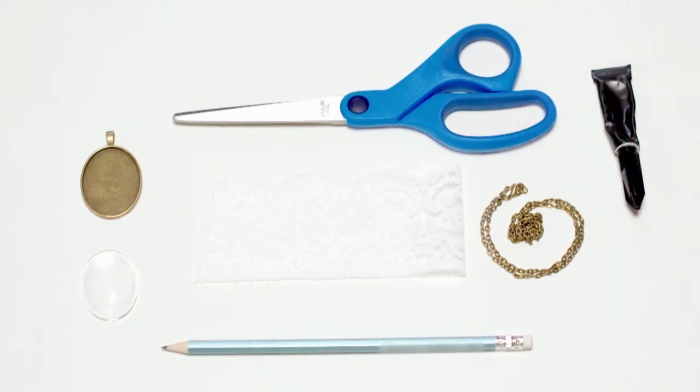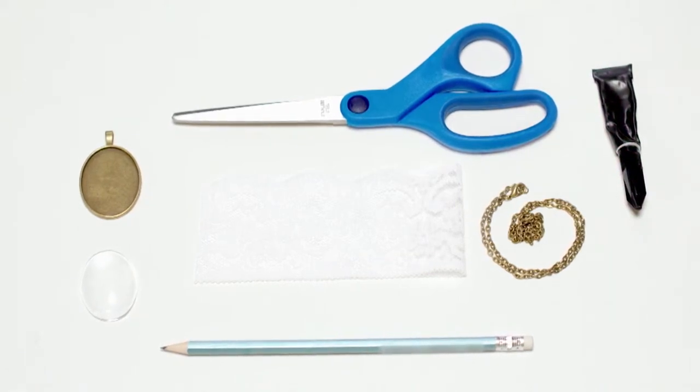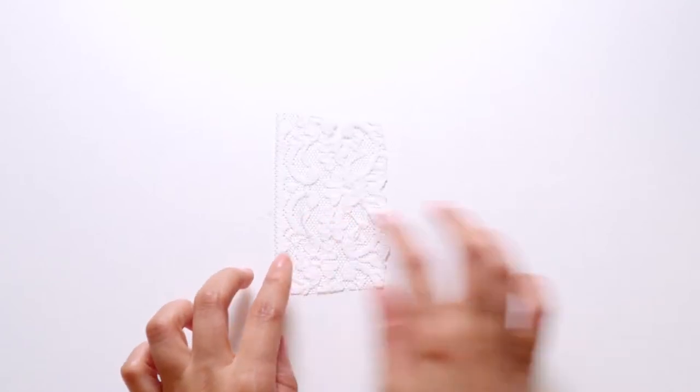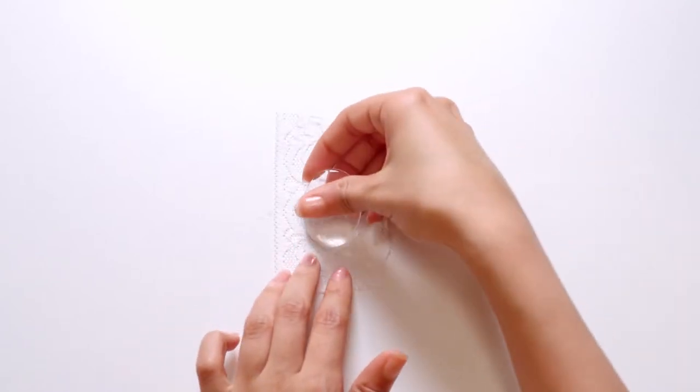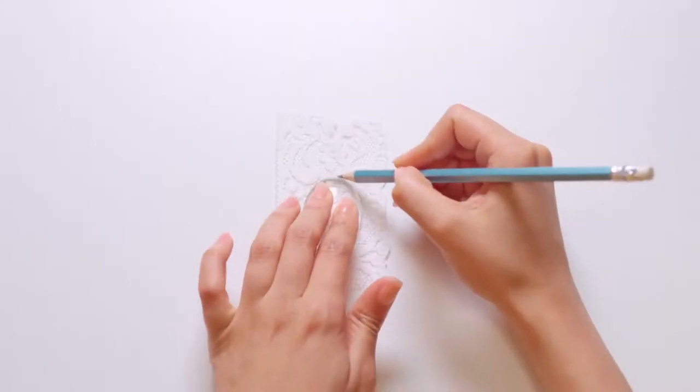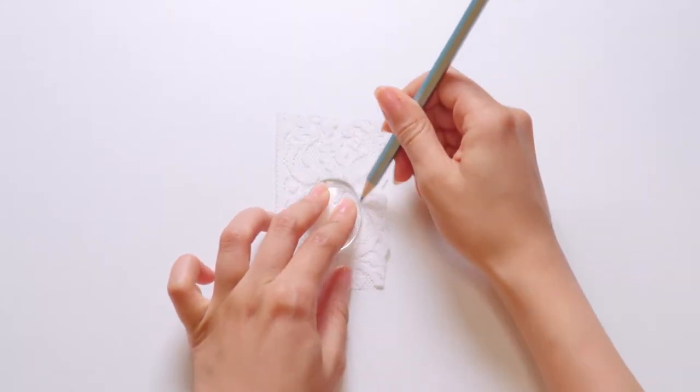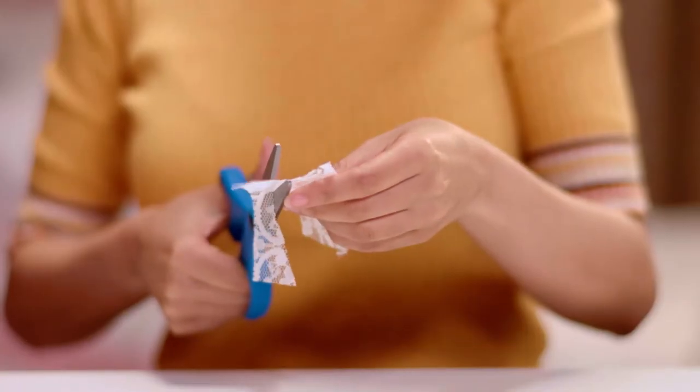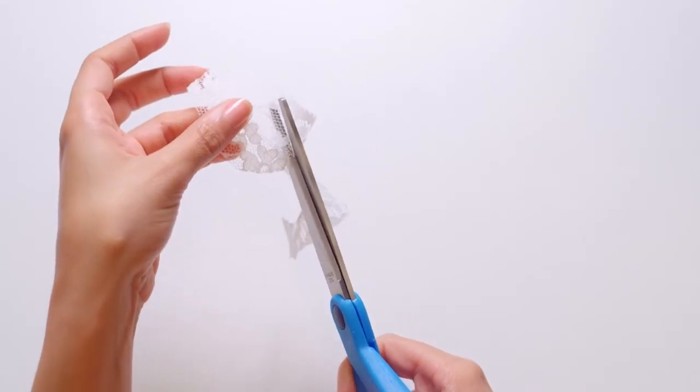Remember to ask your parents permission and take care. To begin, take a small piece of lace fabric and the glass cover. Then use a pencil to draw the outline of the glass cover onto the lace fabric. Take the scissors and carefully cut along the pencil markings.